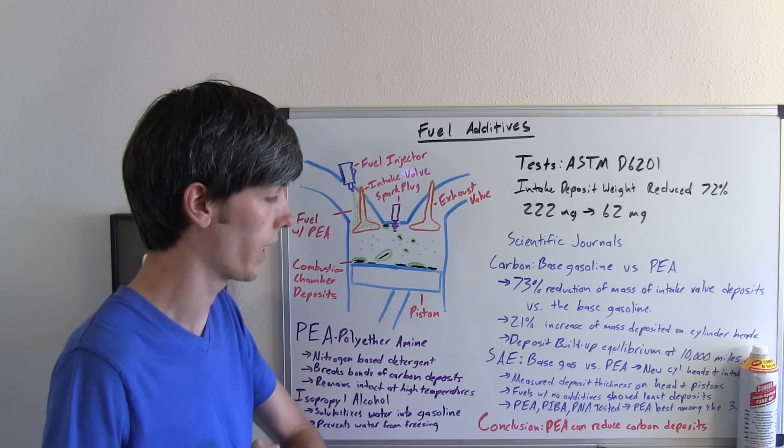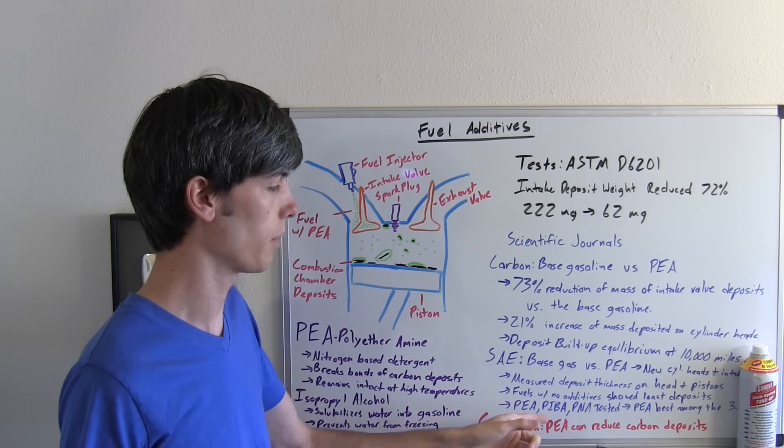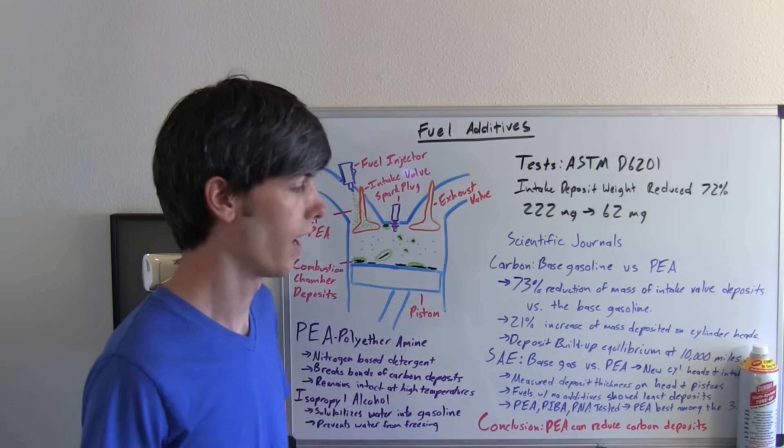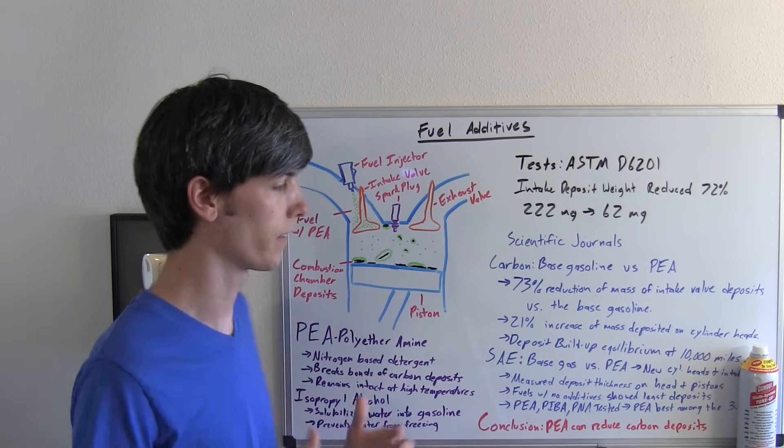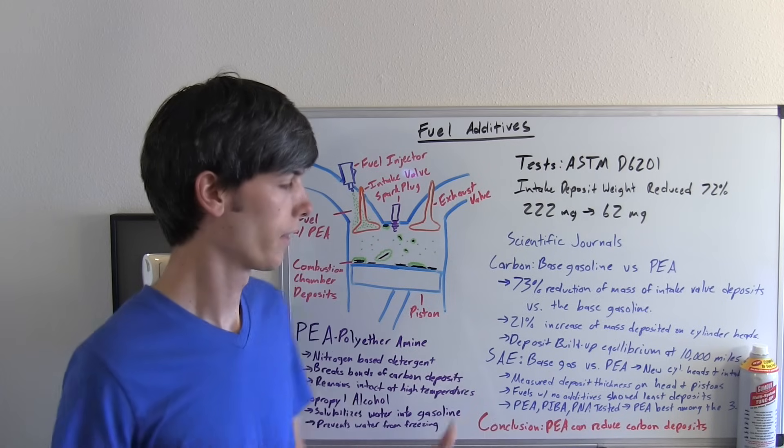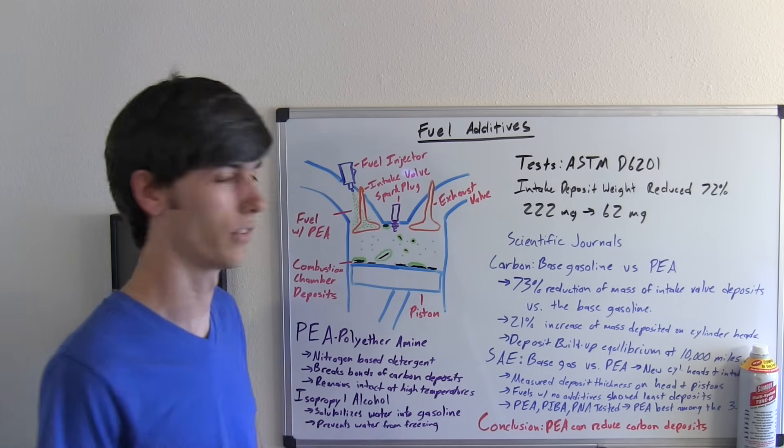They also used several different additives including PEA, PIBA, and PNA and of these three PEA had the least amount of deposits however it was still more than the gasoline without any additives in it.